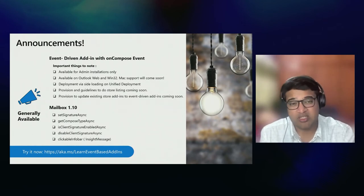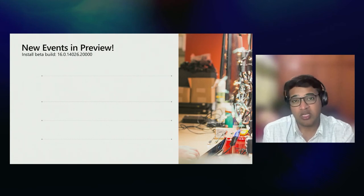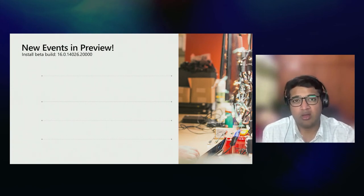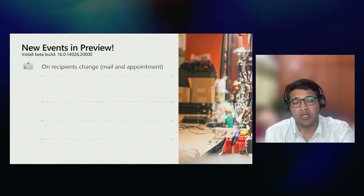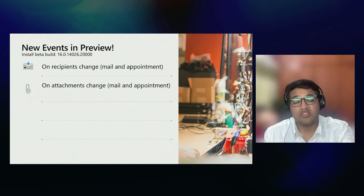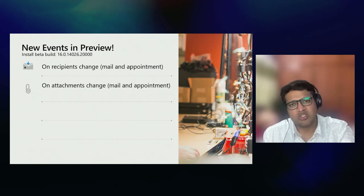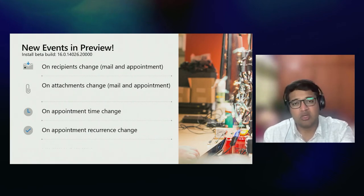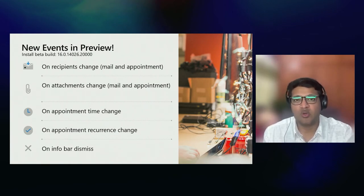Event-based add-ins for the on-compose event are now GA, but we are not stopping there — we are bringing more events for the compose scenario. Starting today, these events are in preview and you can try them on Outlook Web as well as Windows. We have the recipient change event, which triggers an add-in when a recipient is added or removed from a mail or appointment. There's also an attachment change event that launches an add-in whenever an attachment is added or removed. We also have calendar events — appointment time change and recurrence change — and an info bar dismiss event that launches an add-in when a user dismisses a notification message.